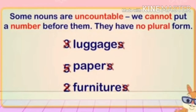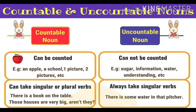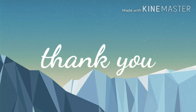Things like milk, water, or luggage — can you count them? No. Those are called uncountable nouns. Some nouns are uncountable: we cannot put a number before them and they have no plural form. For countable nouns we can use singular or plural, but uncountable nouns can only take singular form — no plural at all.